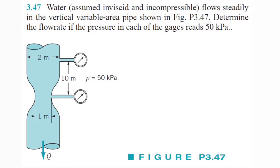Let's go ahead and get started on this problem. It reads: water, assumed inviscid and incompressible, flows steadily in the vertical variable area pipe, and we got to determine the flow rate if the pressure in each of the gauges reads 50 kilopascals.